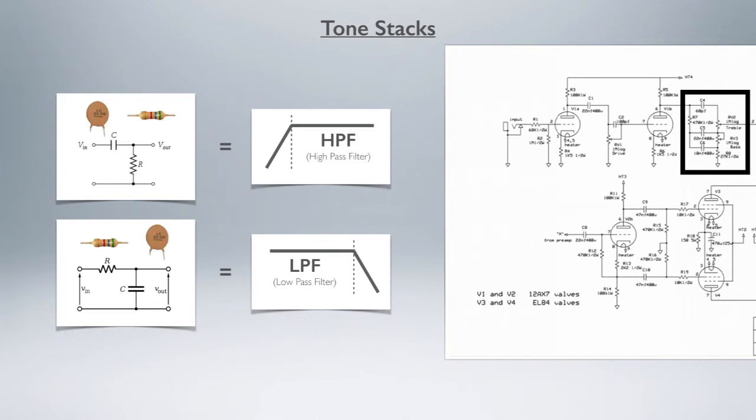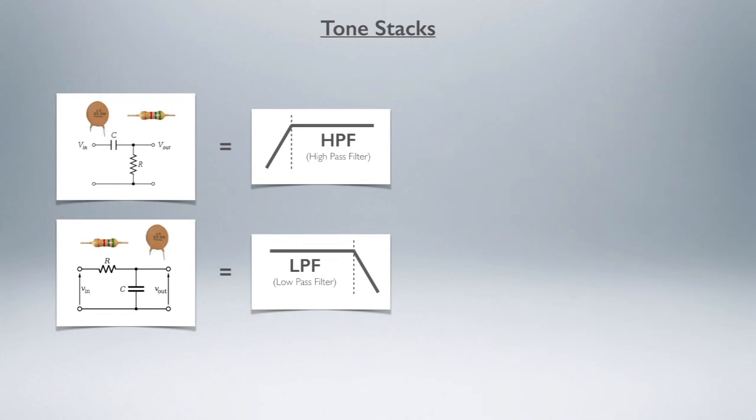Let's have a look at an equation that might freak you out a little bit. This is how we calculate what the cutoff frequency is for any filter. Don't worry about all the stuff there. It's basically the filter cutoff equals one over 2πRC - the values of your resistor and capacitor. Let's just look at a couple of things here.